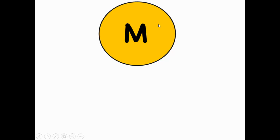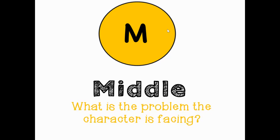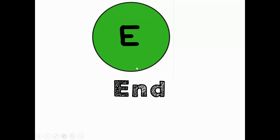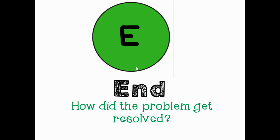Next, we go on to M for Middle — the middle of the story. In the middle of a story, sometimes we find that the character has a problem. We're trying to find out what is the problem that the character is facing. And we go on to E, which stands for End. The end is how did the character solve the problem — how did the problem get resolved or fixed?